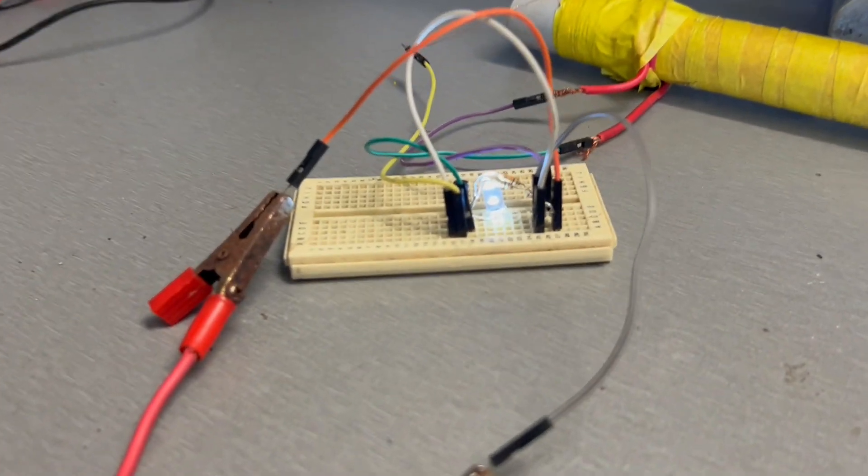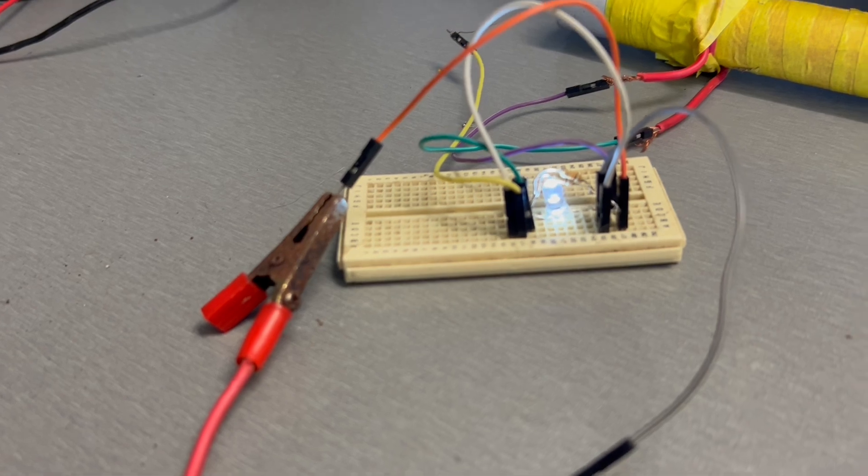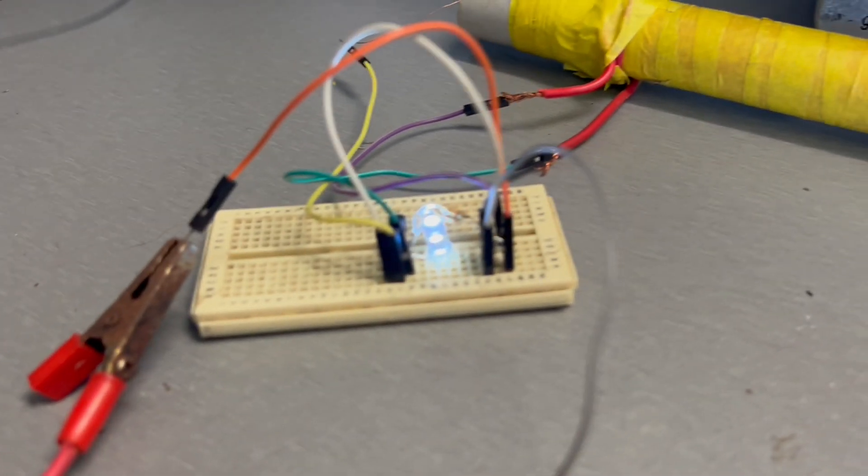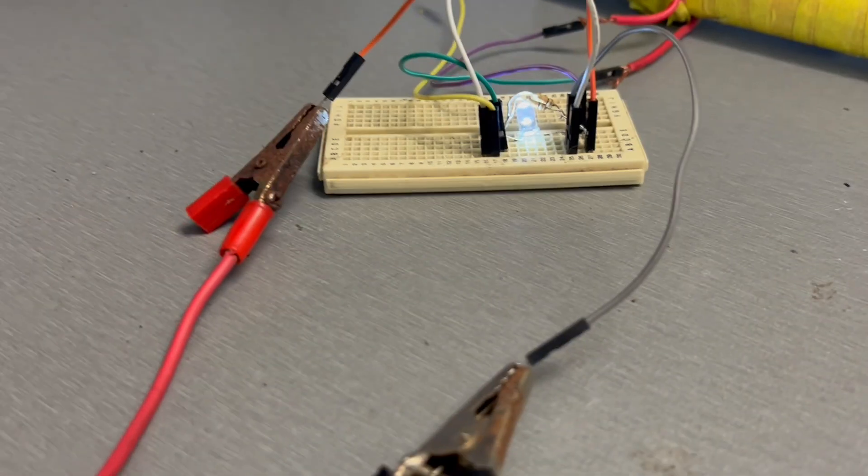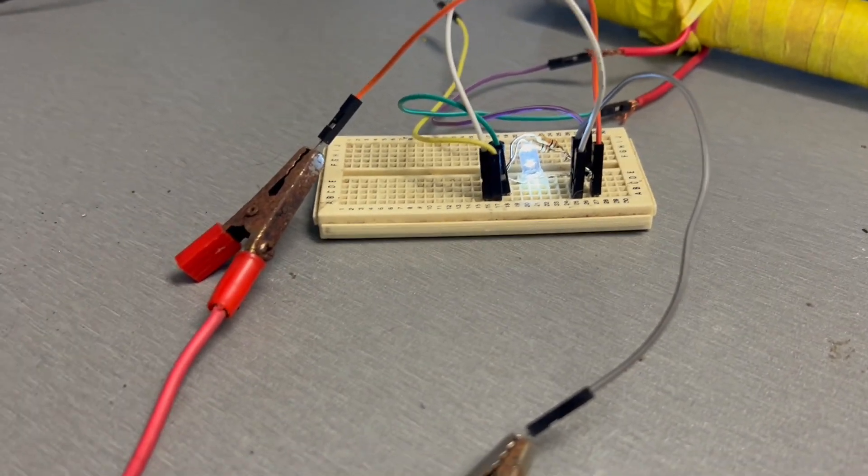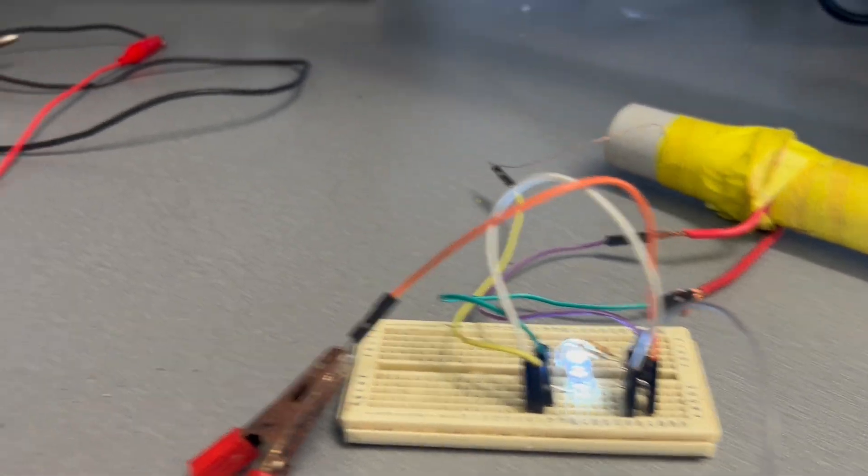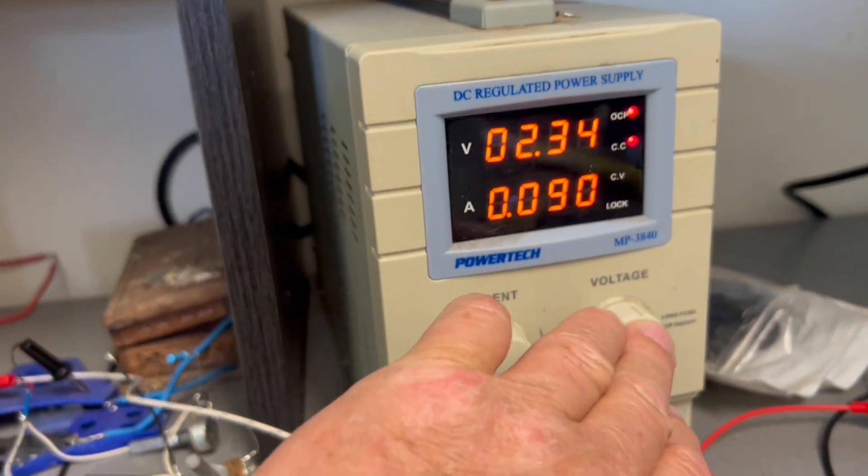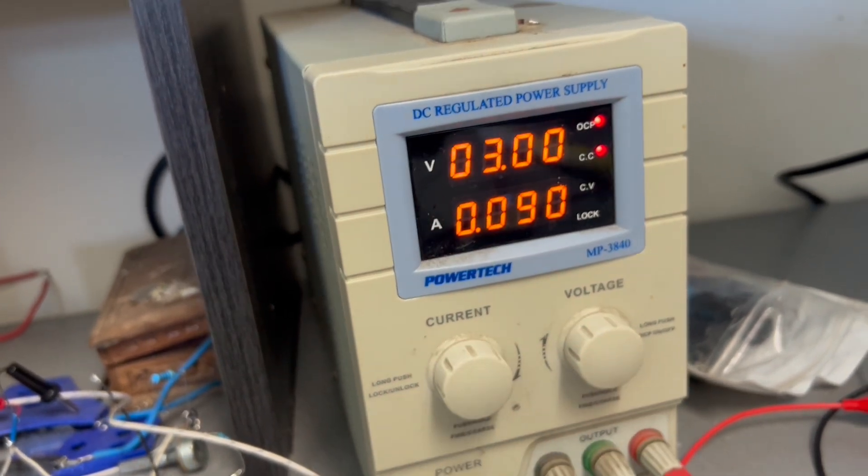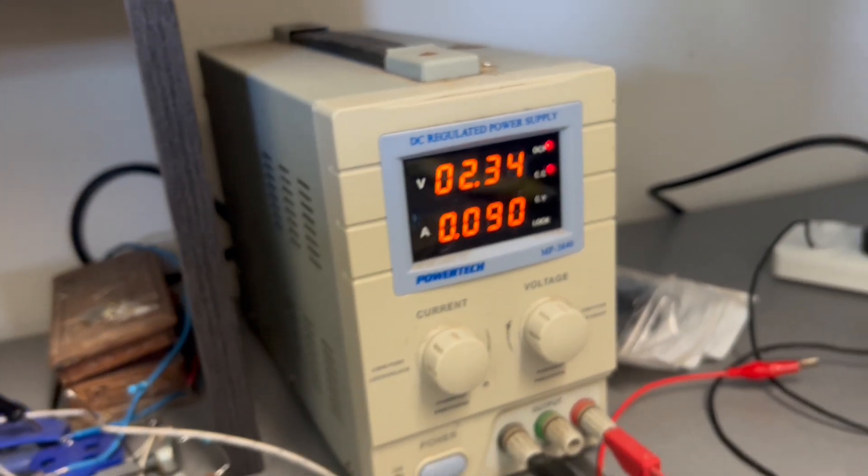G'day. I realized after watching my last couple of videos that it was probably pretty confusing for people. I've simplified everything and I want to demonstrate a couple of things that you're going to find interesting. I've got 90 milliamps at 3 volts. Now this is the interesting thing, or a few interesting things.